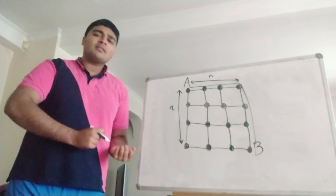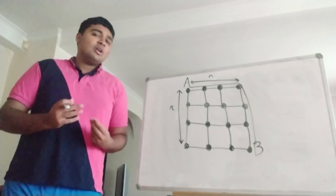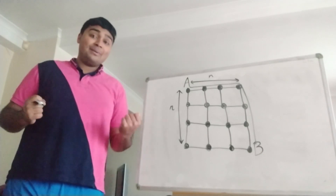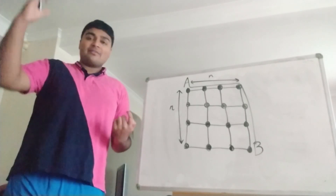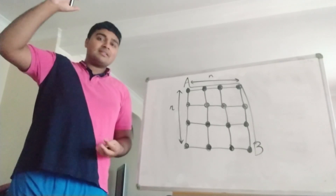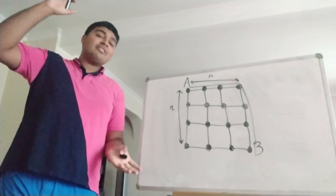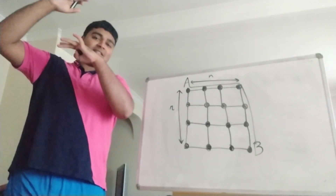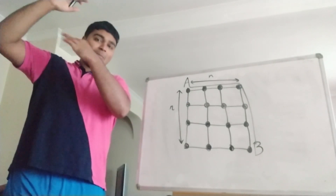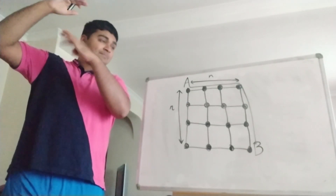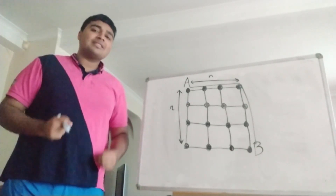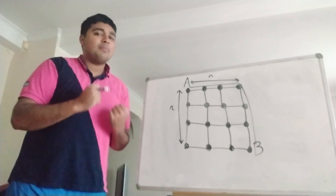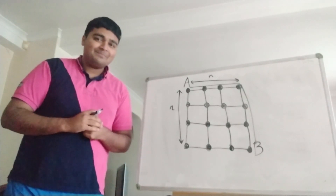To find the path of longest length, we're going to follow a similar algorithm. We're going to find some number such that any path from A to B must be beneath some upper bound, and then we're going to show that there is a path that attains that upper bound.